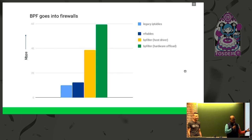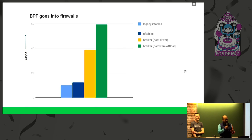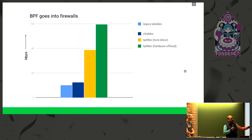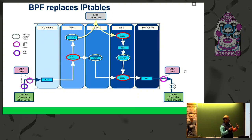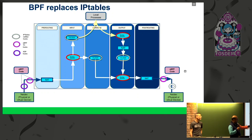This is a comparison of legacy IP tables and the enhanced version with NF tables, and then BPF filters with the host driver and BPF filters with hardware offload. You can see there is a substantial increase in performance by using BPF filters against IP tables. This picture gives an overview of how BPF utilizes the filtering capabilities that IP filter used to do for networking, showing the five different chains that are currently available for any packet to traverse.